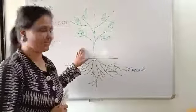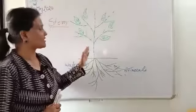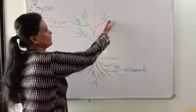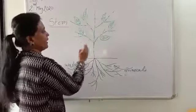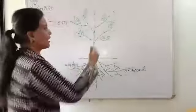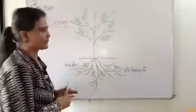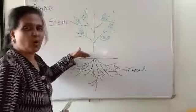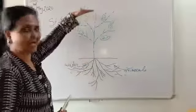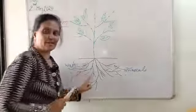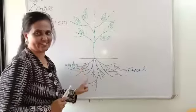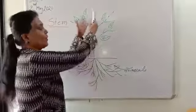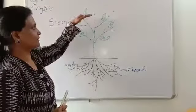Look at this picture. I draw a plant. You can see here the stem. The main stem is here, and here are many stems — many stems grow on this main stem. We call these branches also. Stem always grows above the ground. You can see here the roots of this plant. The roots always grow under the ground and stem always grows above the ground.